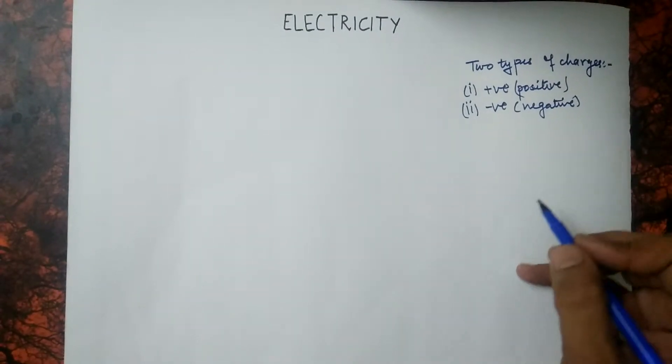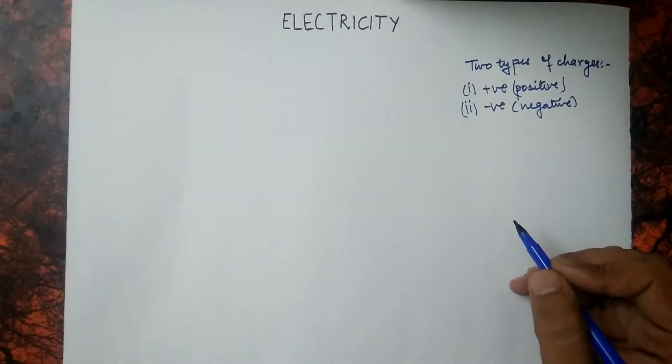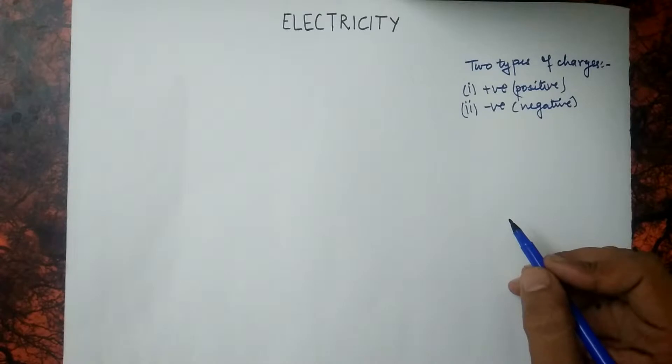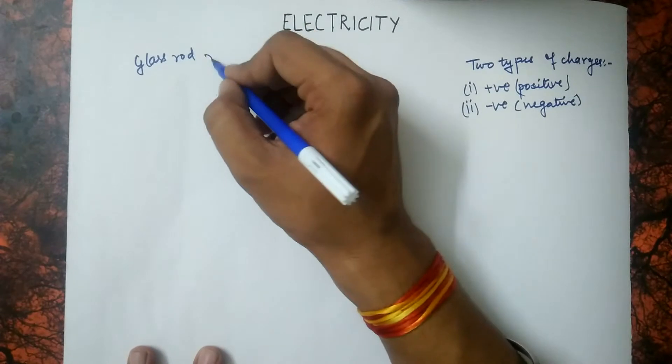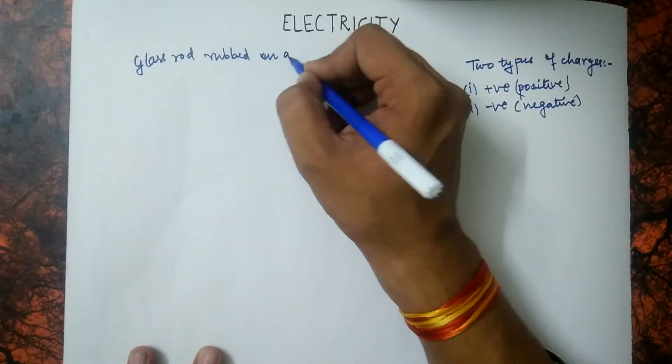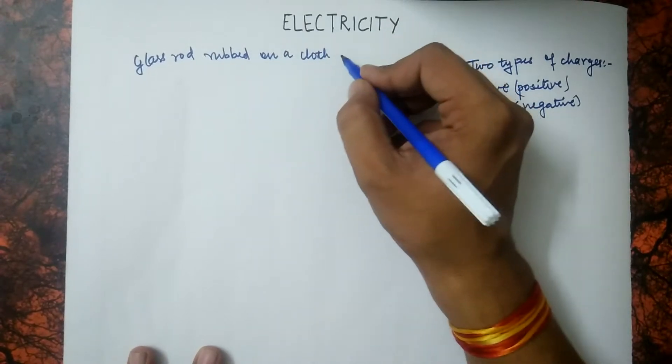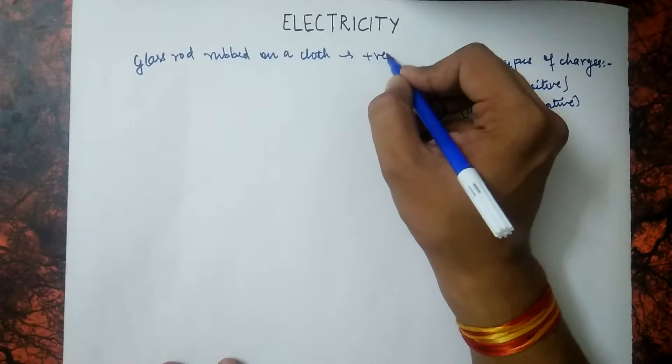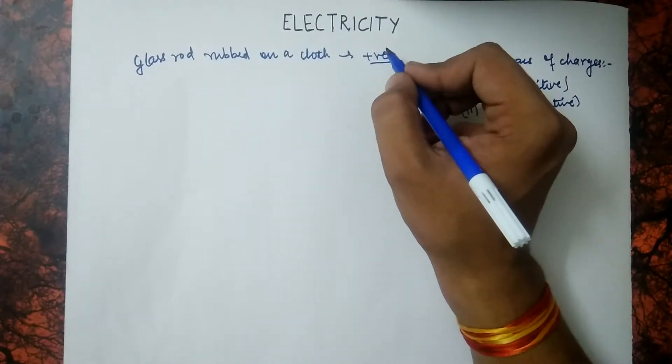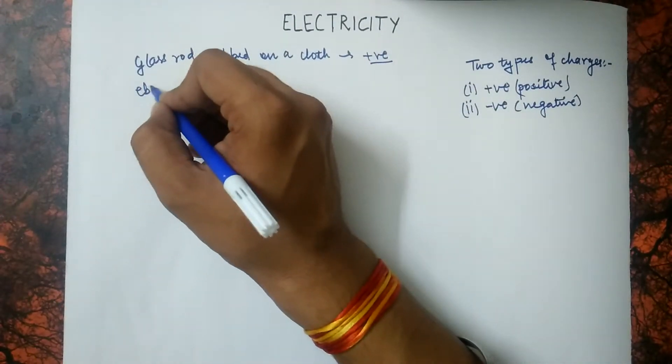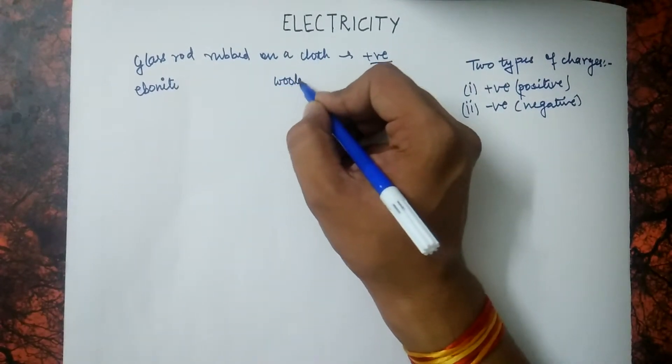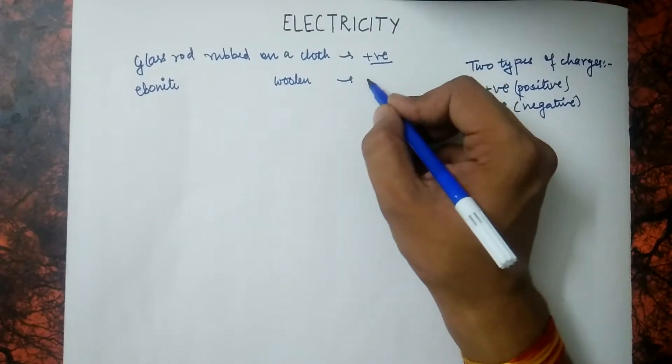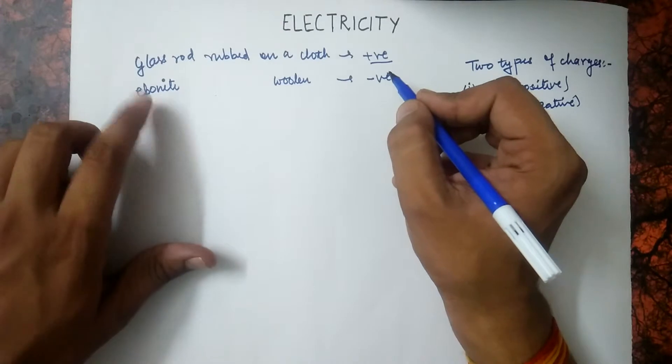Now, how do we consider that this charge is positive? It is actually defined that when a glass rod is rubbed on a cloth, the charge acquired by the glass rod would be positive. And when an ebonite rod, E-B-O-N-I-T-E, ebonite rod is rubbed on a woolen cloth, then the charge occupied would be negative charge on the ebonite rod.